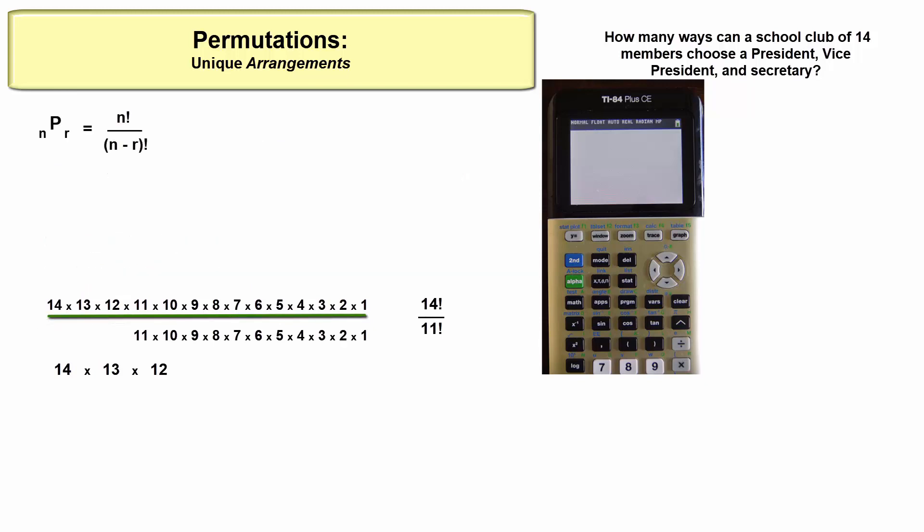This is basically the permutation formula that can only be used when selecting things without replacement and the order being important. n is the number of items to choose from, r is the number of items selected.